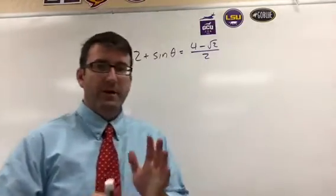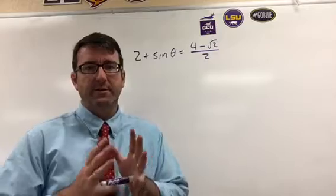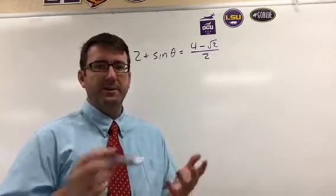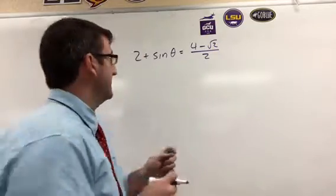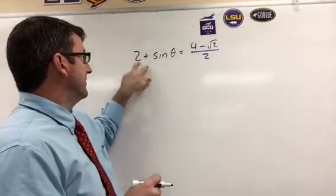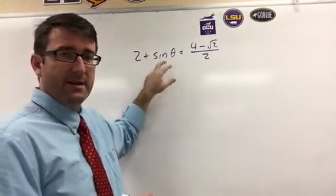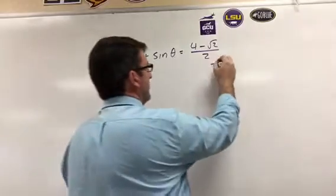Alright, number 11. We're asked to solve this equation for theta where theta is between 0 and 2 pi. So the first thing we're going to do is get this sine by itself. So let's subtract 2 from both sides.